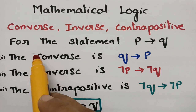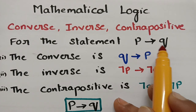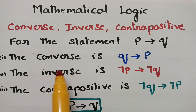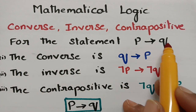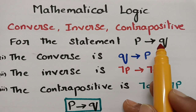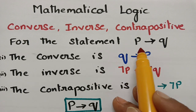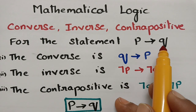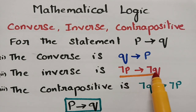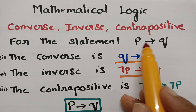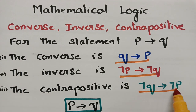For the statement P implies Q — as I have said in my previous video — the converse will be Q implies P. The statement will be vice versa: Q implies P. And what will be the inverse of the statement? The inverse is negation P implies negation Q. The converse will be Q implies P, and the contrapositive is negation Q implies negation P.